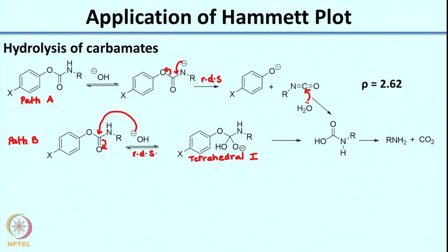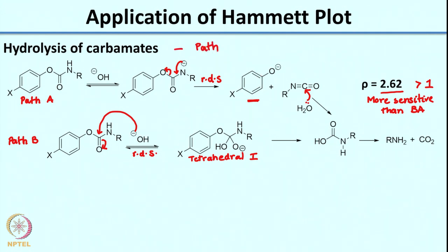With this information, are you able to identify the pathway? The magnitude of rho — greater than 1 — indicates it is more sensitive than benzoic acid. The negative charge formed in the intermediate is highly influenced by the substituent because the negative charge is in conjugation with the aromatic ring. By this reasoning we can say that the hydrolysis of carbamates is going through Path A.